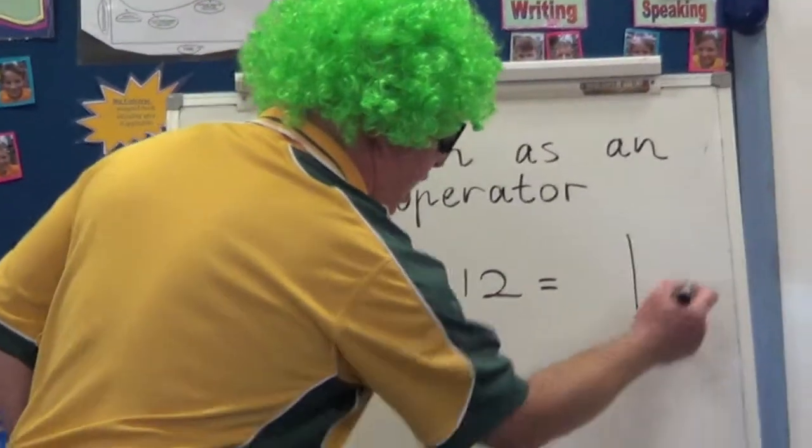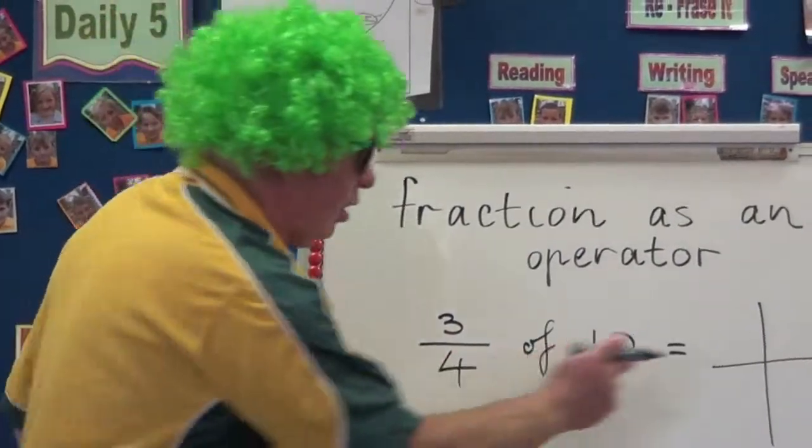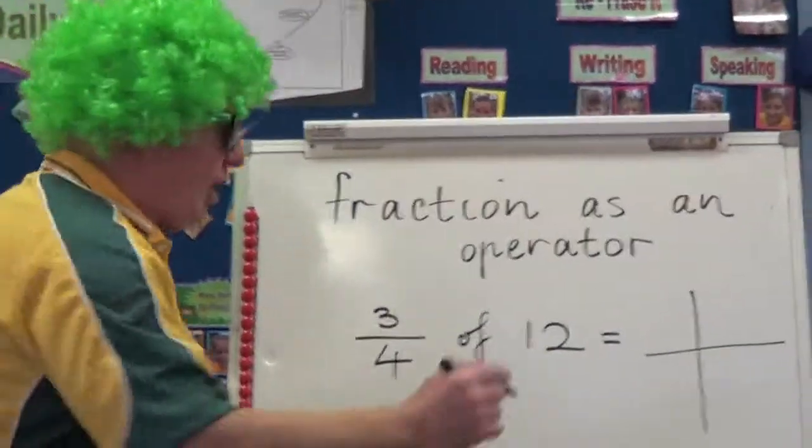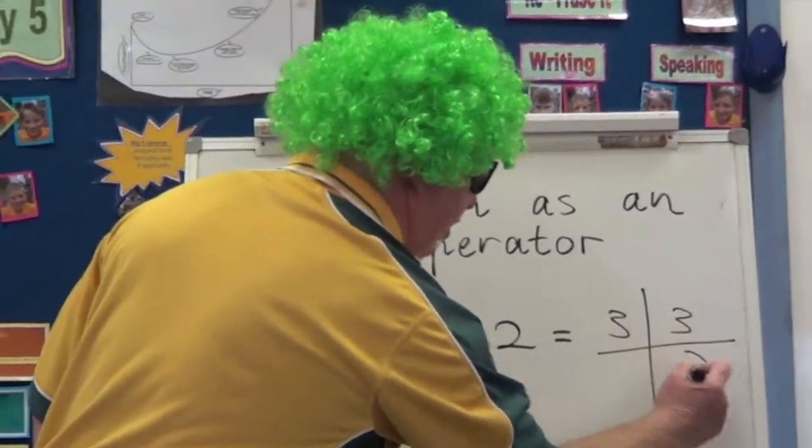Let's make a group of four here. Remember we've got four even groups. One, two, three, four. What goes into twelve four times? Three. Let's put three there, three there, three there, and three there.